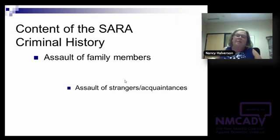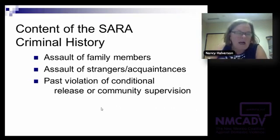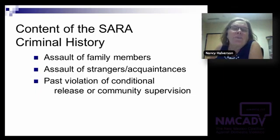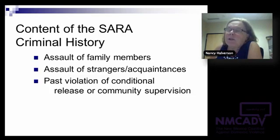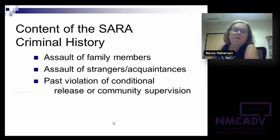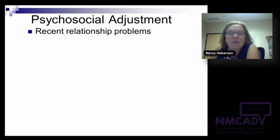The second section — which is interesting and important because it's different from the DVSI — gets at some psychosocial adjustment issues that we become aware of in some of the most difficult cases. It includes relationship problems — separations and fighting — whether there are employment problems, and whether or not this person was a victim of or witness to family violence as a child or adolescent. Substance abuse and dependence is also scored in this section.